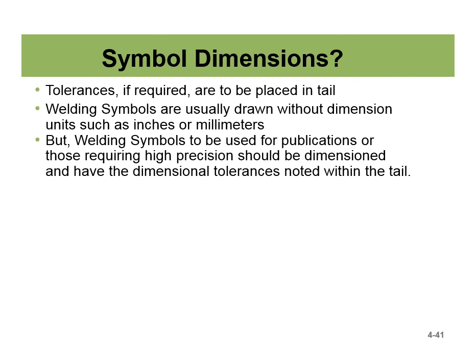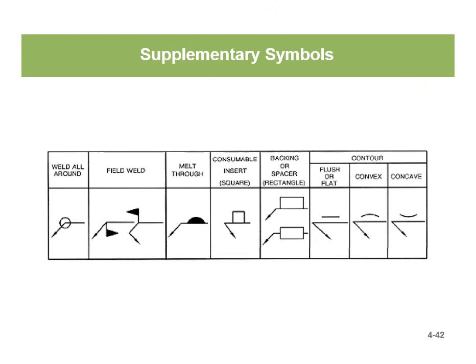Symbol dimensions: tolerances, if required, are to be placed in the tail. Welding symbols are usually drawn without dimensional units such as inches or millimeters, but symbols for publications or high-precision work should include dimensional tolerances noted in the tails. On this slide you can also see supplementary symbols you'll likely encounter: weld all around, field weld, melt through, consumable insert, and contour symbols — flush, flat, convex, and concave. These are supplementary symbols you'll probably run across at some point in your career.